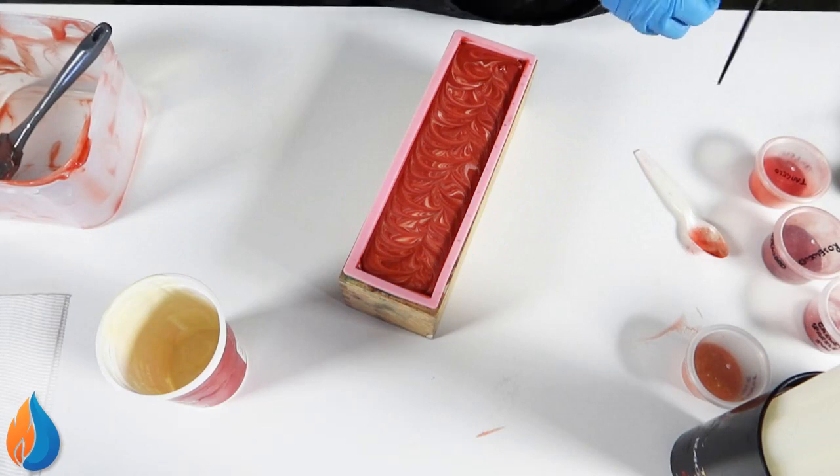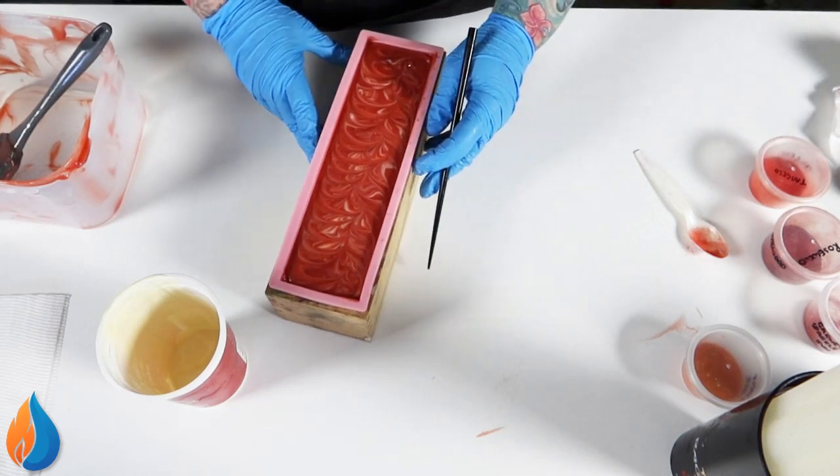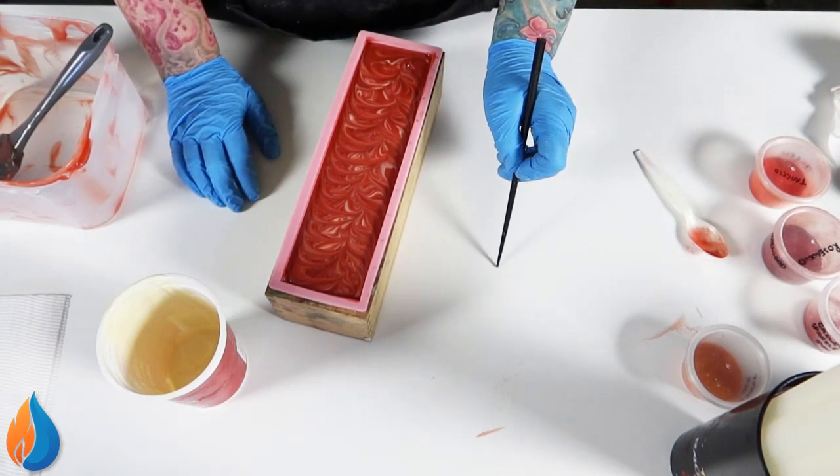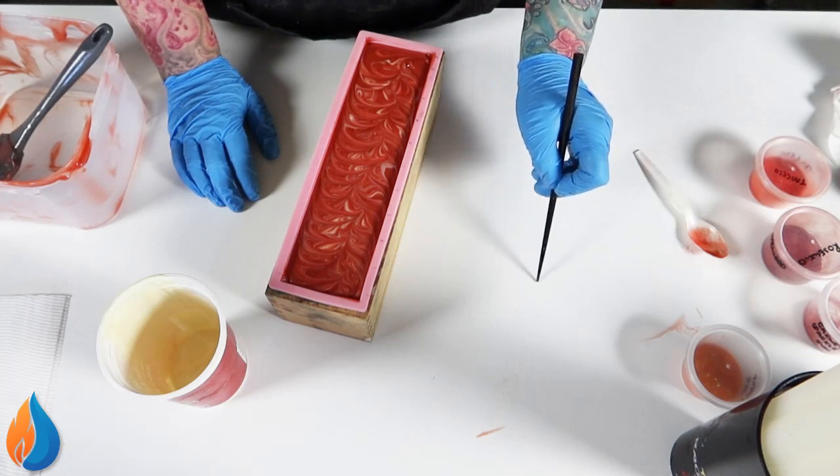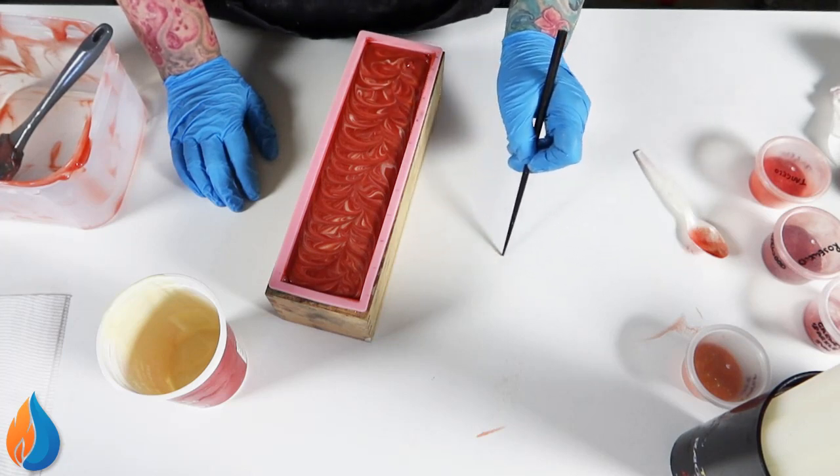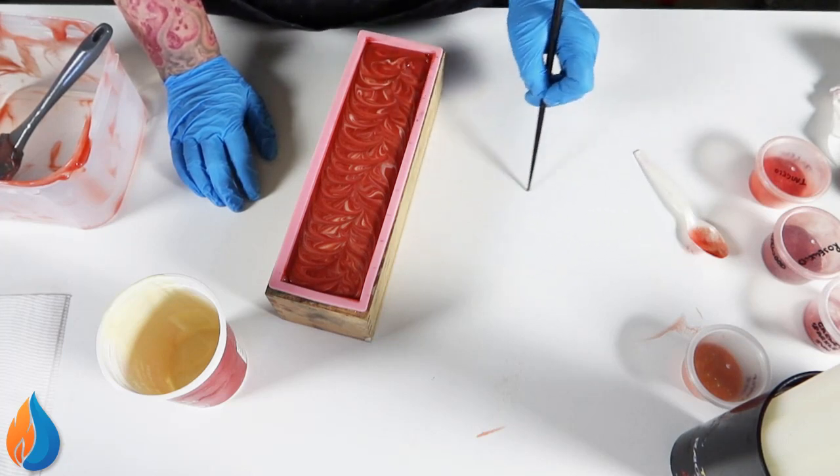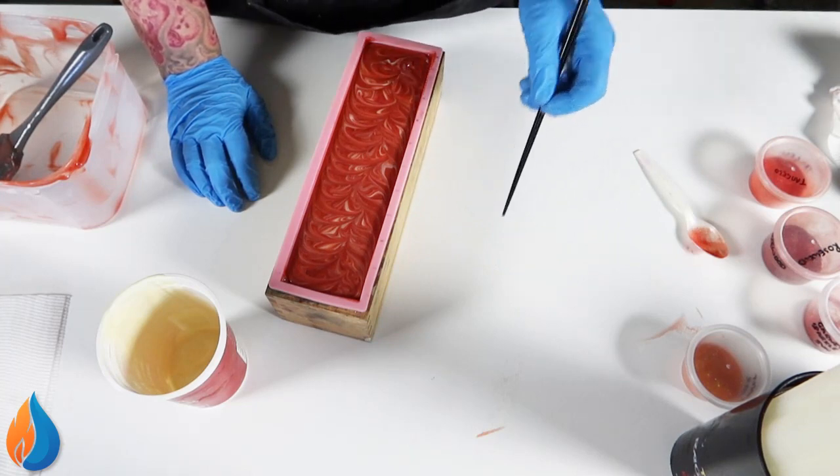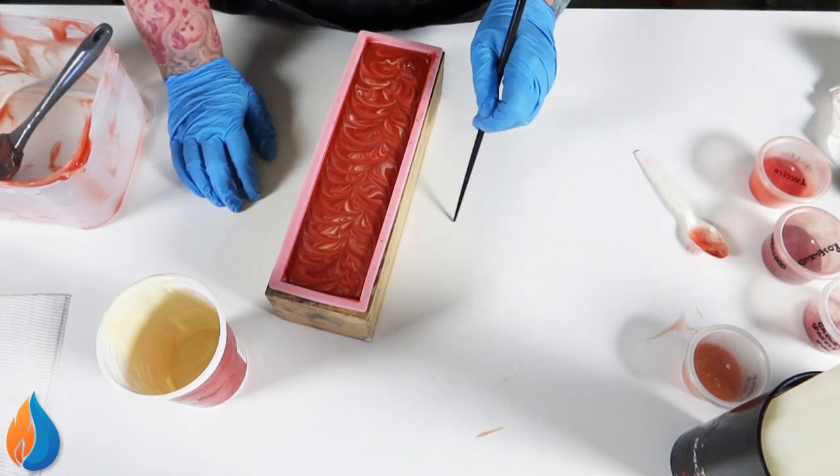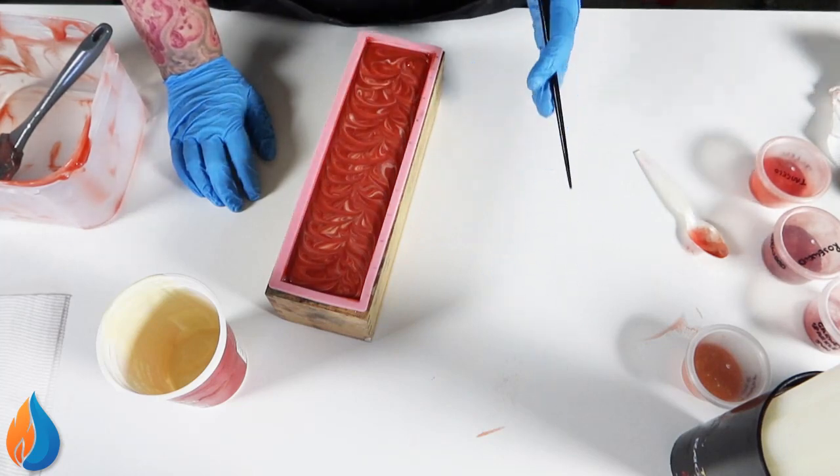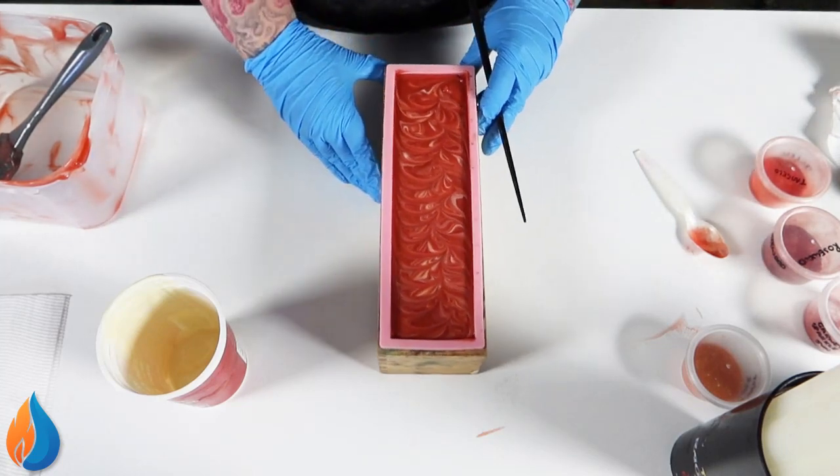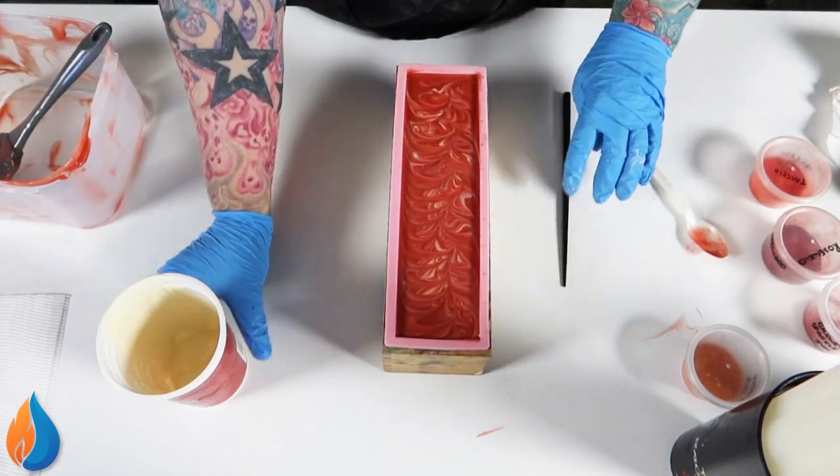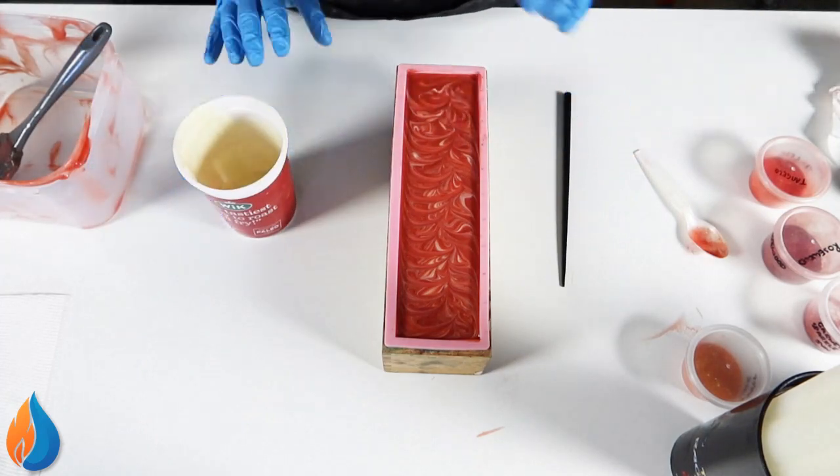So for those of you who don't know, that was called an infinity swirl. What you do is basically start in the middle, go out to the side, loop it around, go out to the side, loop it around, and then slowly move down. It's like an elongated figure eight but you move through your soap whilst you're doing it. It's a really easy swirl.